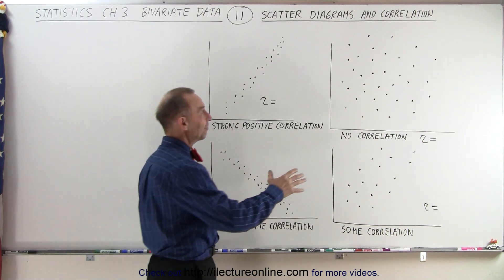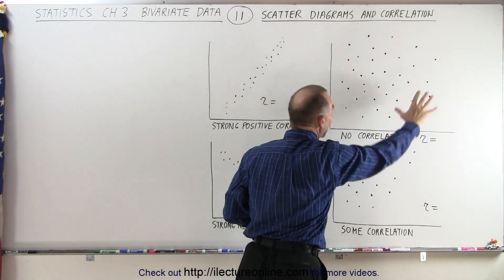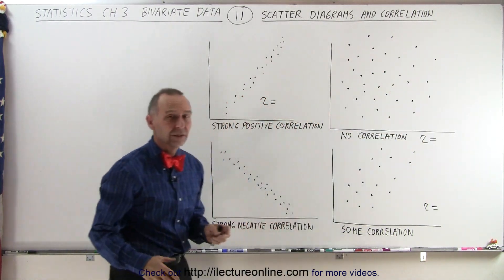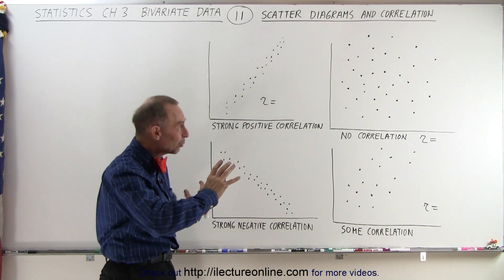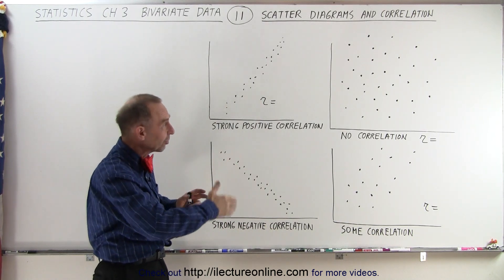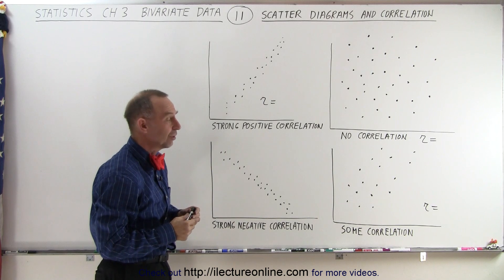Here we have what seems to be a random scattering of data. There doesn't seem to be any particular relationship between the horizontal and the vertical axis.